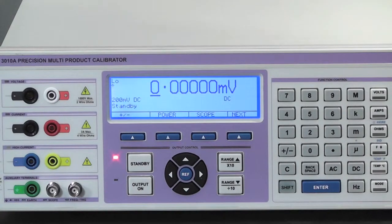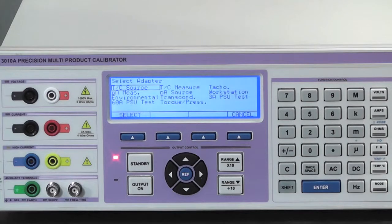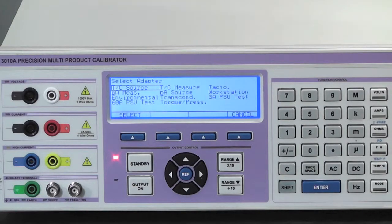To set up the calibrator use the mode key. This will then display the adapter menu. Then using the direction keys, either select TC source or TC measure.